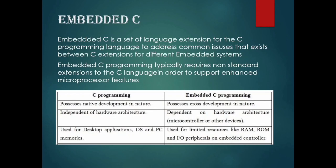Embedded C is a set of language extensions for the C programming language to address common issues between C extensions for different embedded systems. Embedded C programming typically requires non-standard extensions to support enhanced microprocessor features. The difference between C and embedded C: C is the basic programming language independent of hardware architecture, used for desktop applications, operating systems, and PCs. Embedded C is the advanced version, dependent on hardware architecture like microcontrollers, and used for limited resources such as RAM, ROM, and other peripherals.